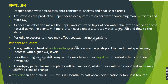Coastal regions experience upwelling events where deeper ocean water circulates onto continental shelves and nearshore areas, exposing productive upper ocean ecosystems to colder water containing more nutrients and more carbon dioxide. Ocean acidification makes the upper oversaturated layer of seawater shallower each year. These natural upwelling events will more often cause undersaturated deep cold water to well up to the shore, and periodic exposure to these conditions may affect coastal marine organisms as they form shells, disrupting their communities.